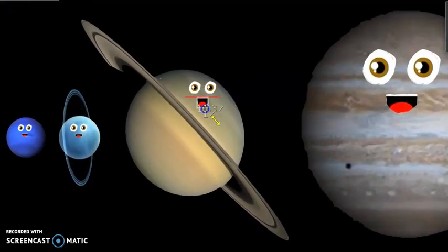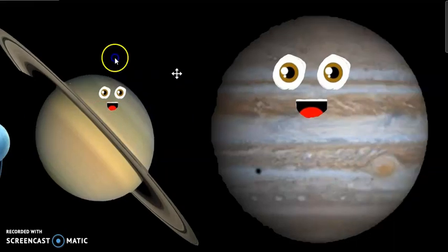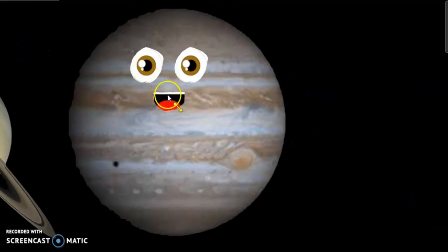Saturn has the most rings. And Jupiter is the largest planet.